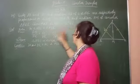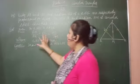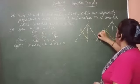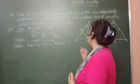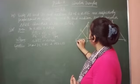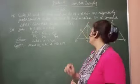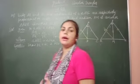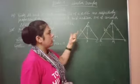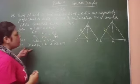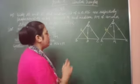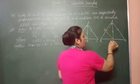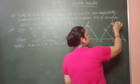We have two sides AB over PQ equal to AC over PR in the same ratio, but the included angle between them is not given, and the third side ratio is also not given. That is why we have to do a construction. We draw a line DE parallel to AC in triangle ABC, and from point M, we draw MN parallel to PR.